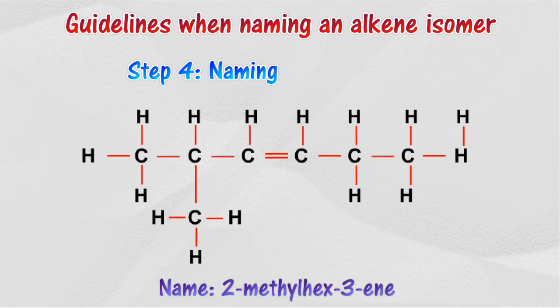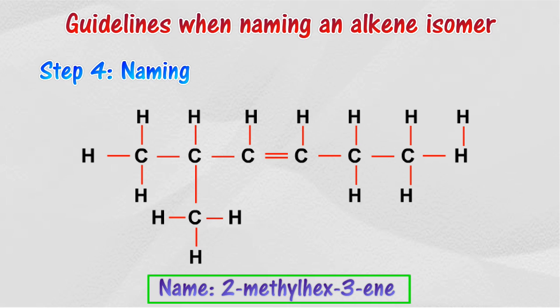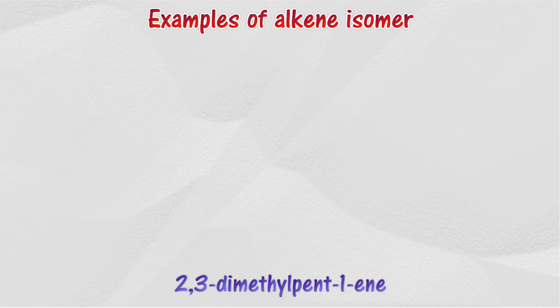Step 4: Naming. Use commas to separate numbers and hyphens to separate words from numbers. So the name of this alkene isomer is 2-methylhex-3-ene. Given here are a few further examples of alkene isomers.